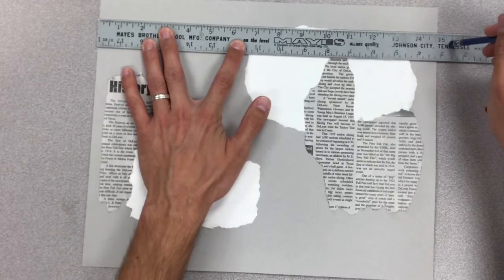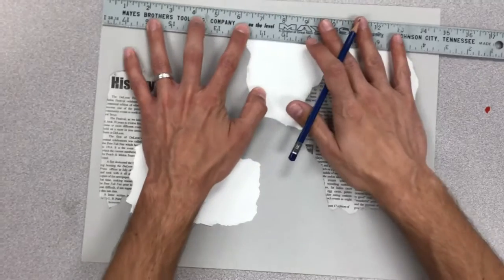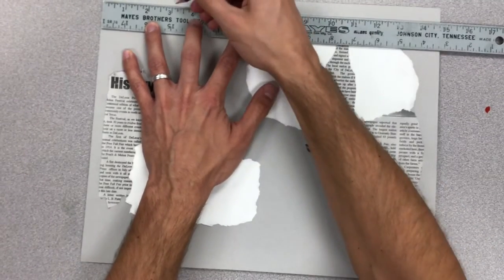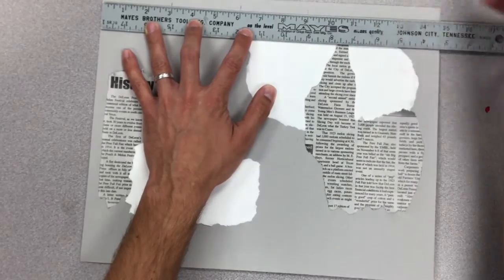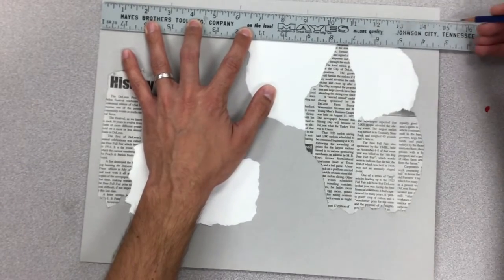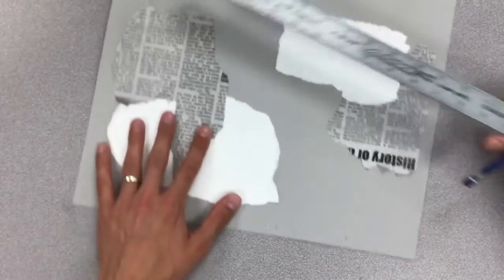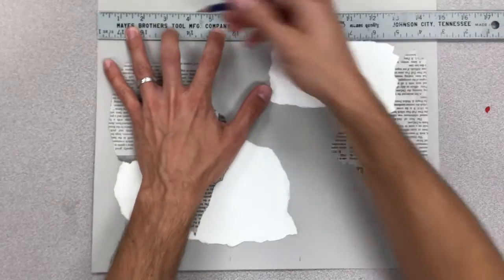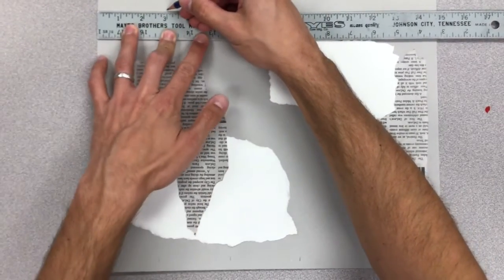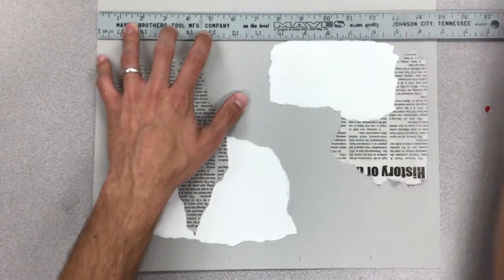So we have 15 inches. We're going to divide that by 5, which equals 3. So on the top of this paper here, I'm going to put a mark at 3, 6, 9, 12, and then 15. But 15 is the end of the paper. And then I'm going to flip it around. I'm going to do the same thing on the other side. 3, 6, 9, 12.